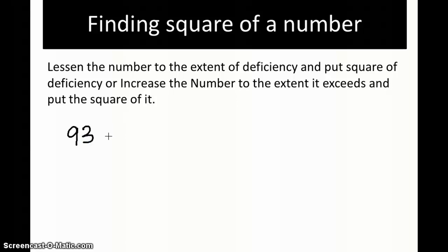93 is 7 less than 100. To find the square, the rule says lessen the number to the extent of the deficiency from the base. The base here is 100, so the deficiency is 7. So 93 minus 7 comes to 86, and then put the square of the deficiency. Deficiency is 7, put the square of it which is 49. 7 squared is 49. That's all, that is the answer.